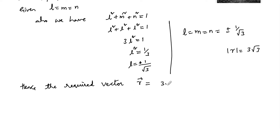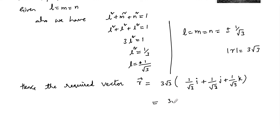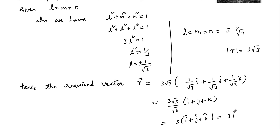We write r as 3√3 times the unit vector, which is (1/√3)i + (1/√3)j + (1/√3)k. Simplifying, 3√3/√3 gives 3, so the required vector is 3i + 3j + 3k, whose length is 3√3 units.